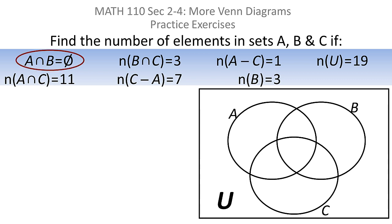I guess the easiest thing to put in right away is they told us that the intersection of A and B was null. Well, the intersection of A and B is the area that overlaps between A and B, and if it's null that means there's nothing in there and there are no elements. So there are zero elements in the top part of that overlapping area and zero elements in the bottom part of that overlapping area.